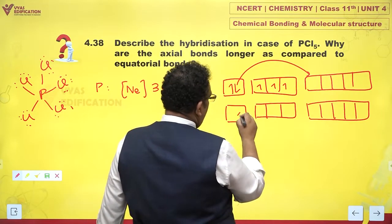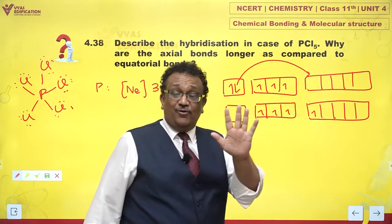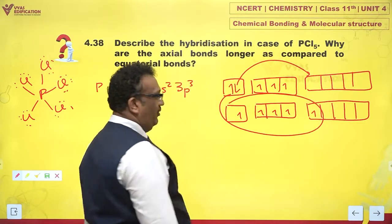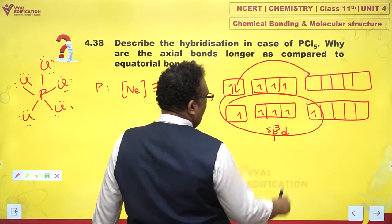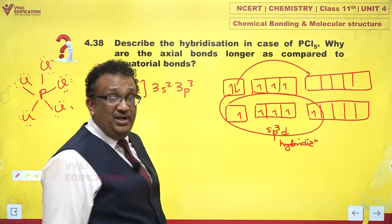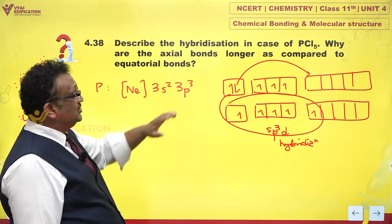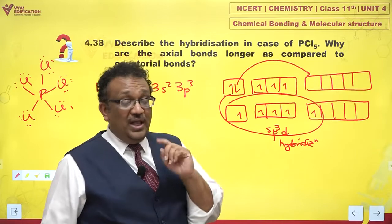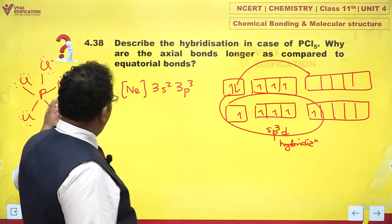There is only one possibility — an excited state. I get this idea by drawing the Lewis dot structure. I drew the structure, counted, and phosphorus has formed 5 bonds. So I make this jump: now I have 1, 2, 3, 4, 5 unpaired electrons, and they form 5 sigma bonds. Let me hybridize them so that they look alike — I get sp3d hybridization. One s, three p, and one d orbital undergo hybridization to give 5 sp3d orbitals of phosphorus. Each of these sp3d orbitals overlaps with the p orbital of a chlorine atom, giving PCl5.